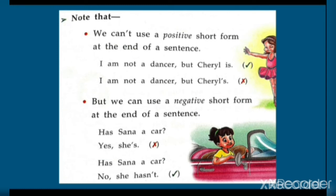These are our negative short forms, which we can use in a sentence at the end. For a positive answer we use the full form — for example: 'Yes, she is.' This is the positive form. For a negative answer we can use the short form: 'No, she hasn't.'